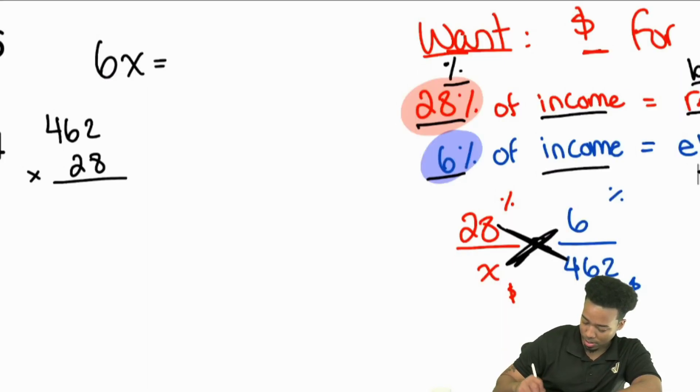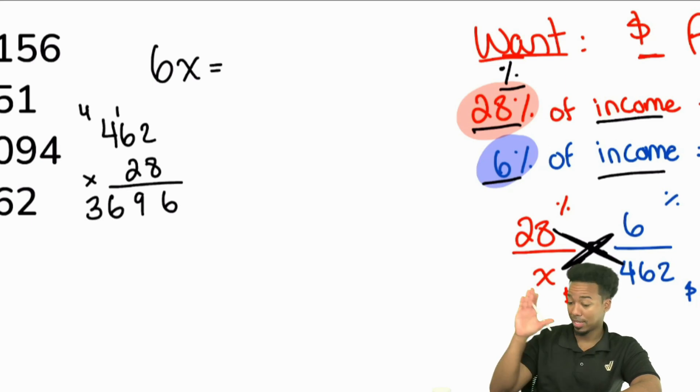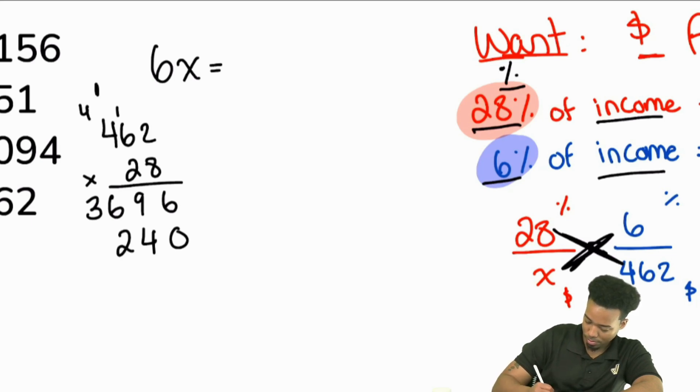All right. So we're going to have 2 times 8, that'll be 16. 6 times 8, that'll be 48. Carry the 1, that's a 9. 4 times 8, that'll be 32. Carry the 1 that's 33. Or excuse me, 32. Carry the 4, that's 36. From there, we're going to put the 0 down. Then we got 2 times 2, that'll be 4. 6 times 2, that'll be 12. And then we have 4 times 2, that'll be 8. Carry the 1, that is a 9.